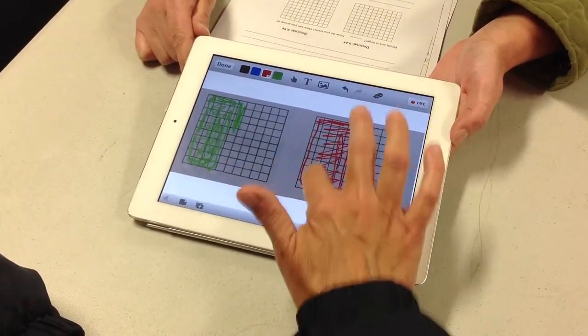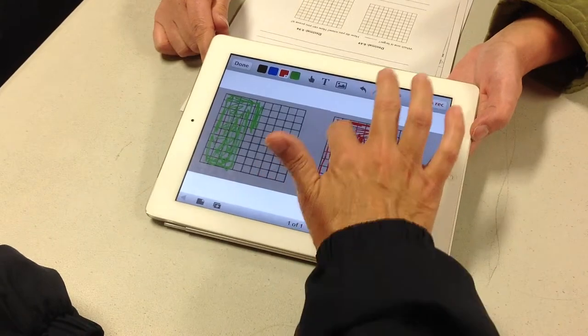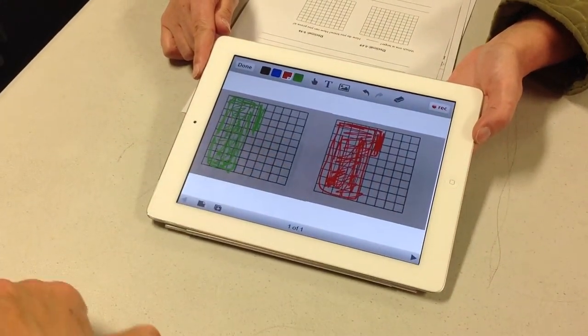Well, this one's bigger. So that one's bigger. Yep, because that's 54 squares, and that one's only 45.